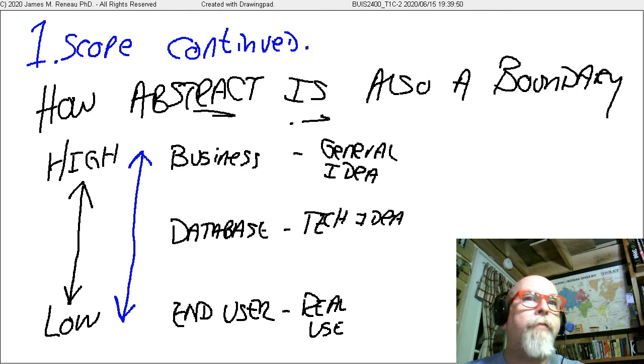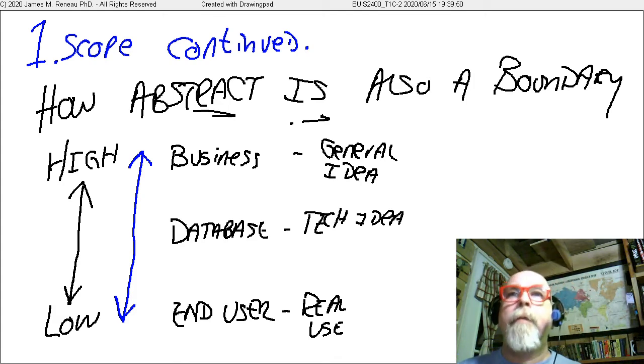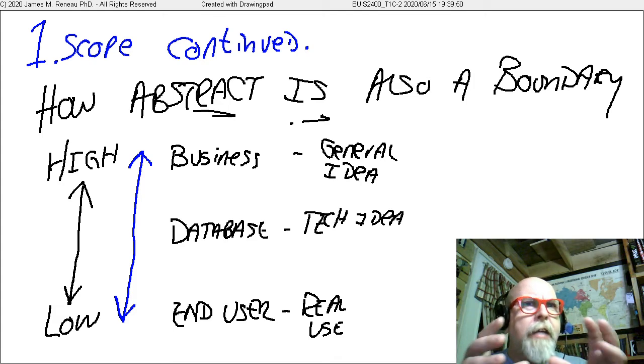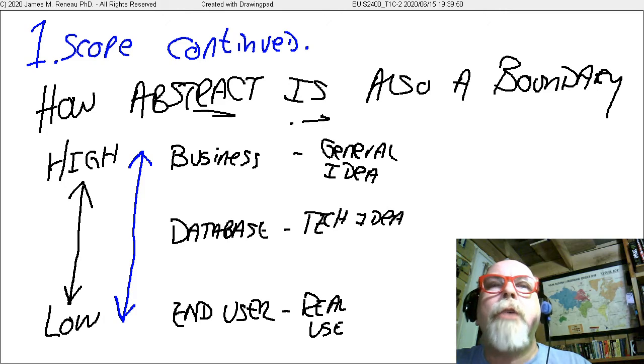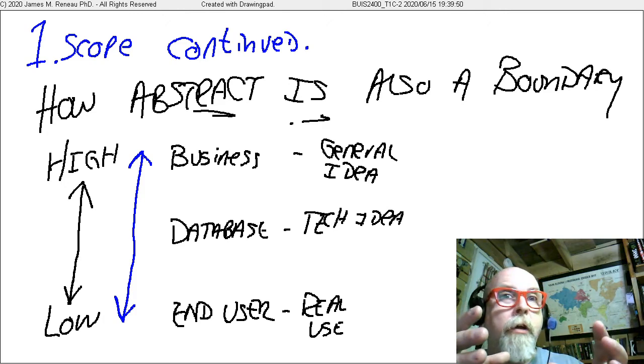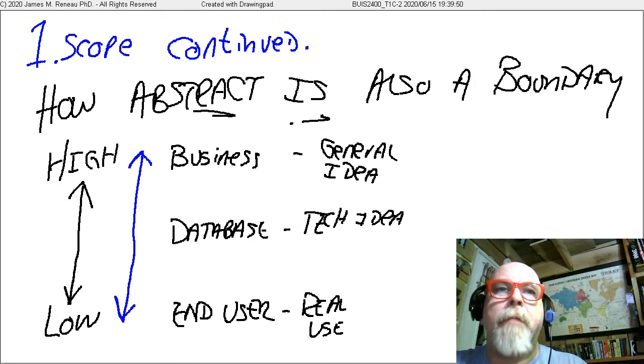You can see how those are different levels of abstraction. Looking at data from the business up there flying around in the clouds, kind of looking down and going, okay, we need that. Whereas we get closer, more technical, we would get down into, well, we need this and this and this, but when we get down to the low level, the end user abstraction within scope, it's going to go into all the details of all the tables and all the fields. So scope is not only the boundary around, but the scope has to include the level of abstraction within the data model.